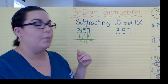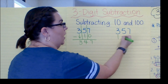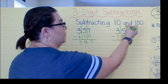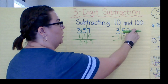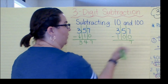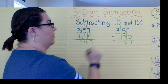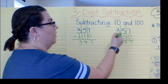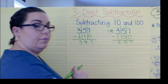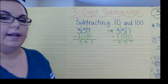Now let's do 100 — same idea. We're going to line the numbers up, minus 100, and just subtract straight down. Seven minus zero: you take away nothing, you still have seven. Five minus zero: you take away nothing, you still have five. Three take away one: you have two. Simple steps.